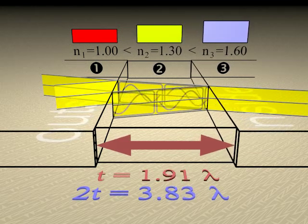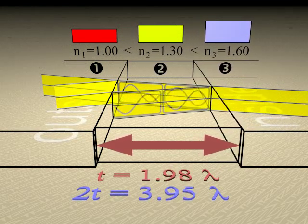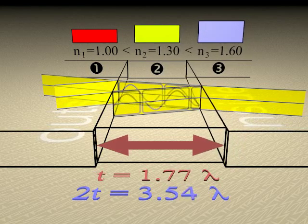The distance traveled by the beam within the thin film medium is equal to approximately twice the thickness of the medium.